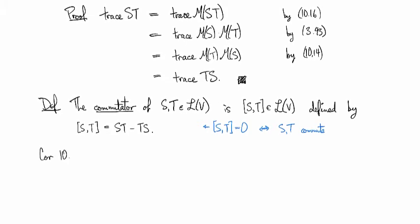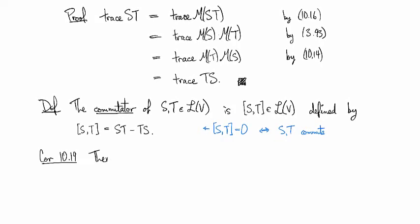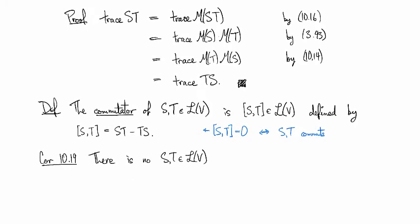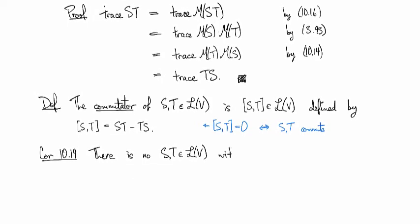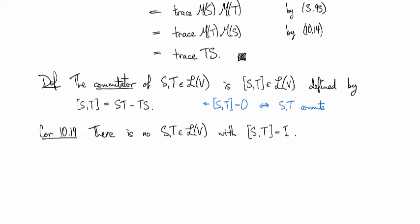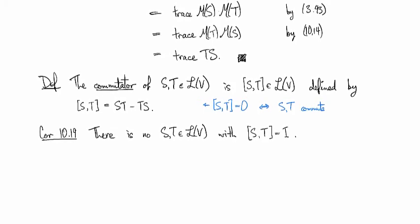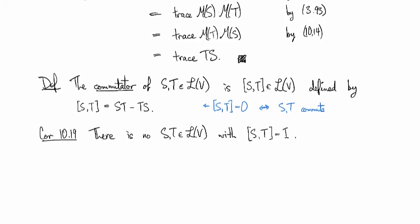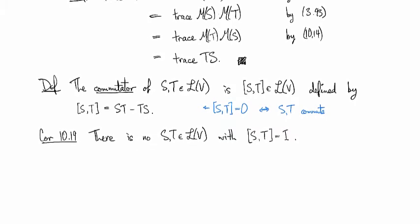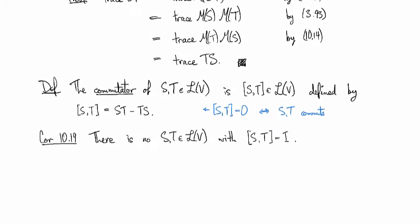So then we have corollary 10.19, which is the curious fact that there is no S, T in L(V) for which the commutator is the identity. This is actually an interesting and surprisingly deep sort of thing. The proof looks straightforward, but when you realize how much went into it in the way of working the tools together, it's actually a little bit hairy.